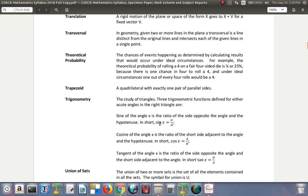The sine of the angle x is the ratio of the side opposite to the angle and the hypotenuse. In short, sine x is opposite over hypotenuse. Cosine of the angle x is the ratio of the short side adjacent to the angle and the hypotenuse. In short, cos is a over h, adjacent over hypotenuse.